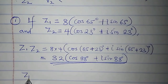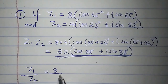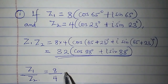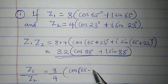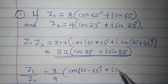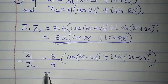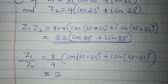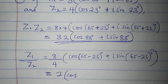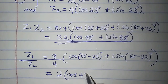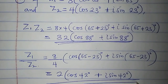Now what will be z1 over z2? I will divide the first modulus by the second: 8 over 4. Then I will subtract the arguments: cos(65 − 23)° + i sin(65 − 23)°. So z1/z2 is equal to 2 times cos 42° + i sin 42°. This is z1 over z2.